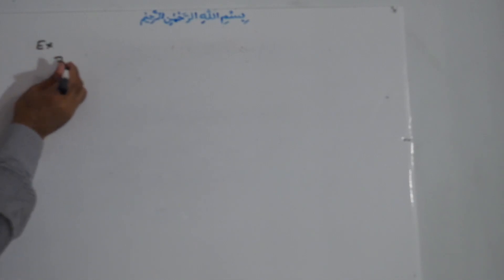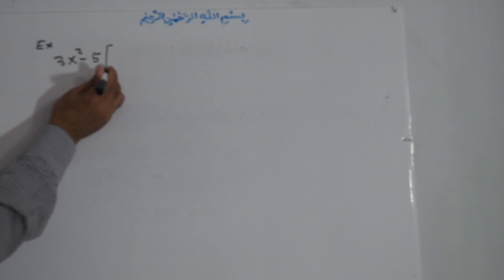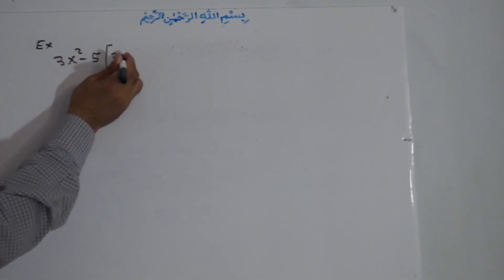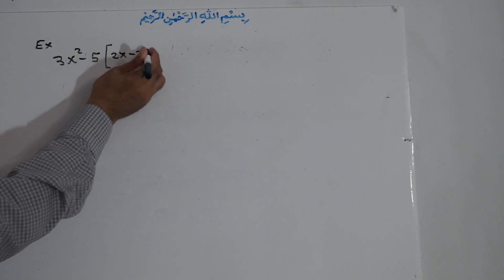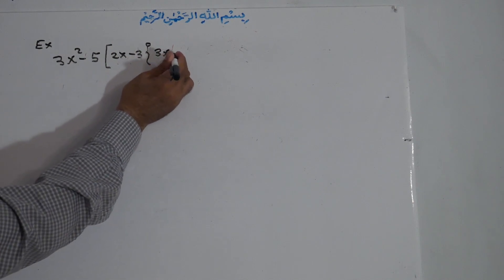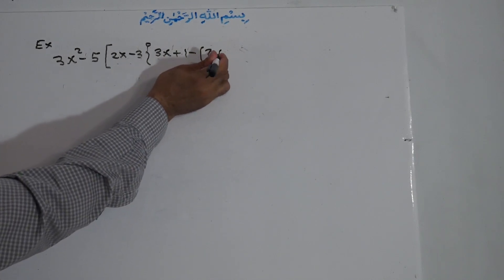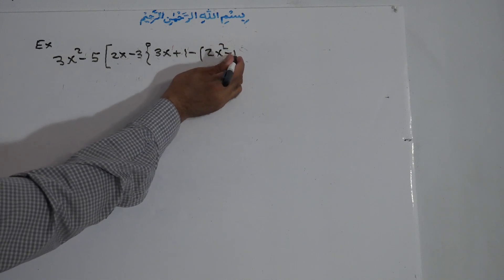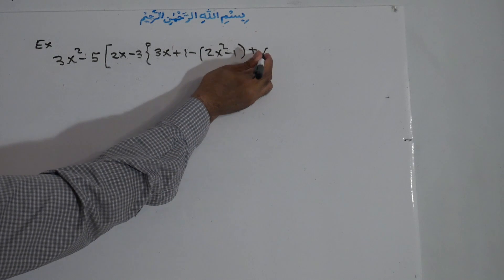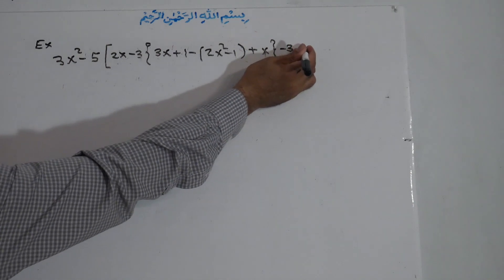Now I'll give you one example. The expression is: 3x² minus 5, big bracket: 2x minus 3, medium bracket: 3x plus 1, minus 1, minus small bracket: 2x² minus 1, plus x, medium bracket, minus 3x, big bracket.